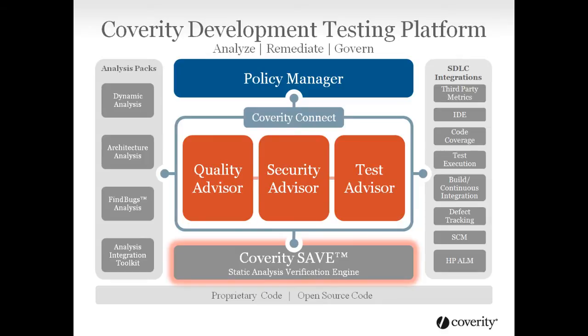Coverity Static Analysis Verification Engine, or SAVE, is the brain of the Coverity Development Testing Platform. SAVE has evolved over a decade of research and development and experience from thousands of customers and analysis of more than 5 billion lines of proprietary and open source code. It applies multiple patented analysis techniques to automatically and intelligently test code as it's written. It accurately identifies issues that are so hard to spot and unpredictable that it's unlikely or impossible they would be found during manual code review or traditional testing.